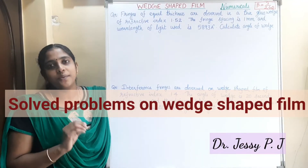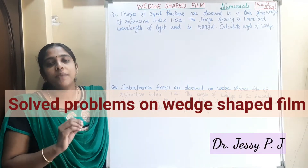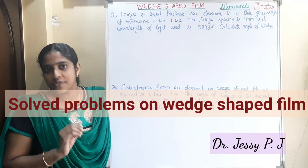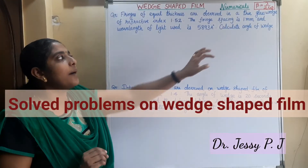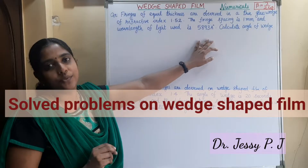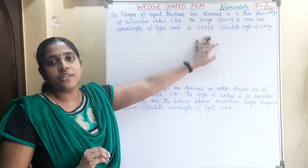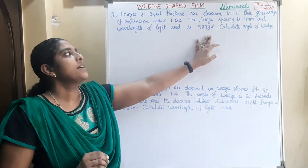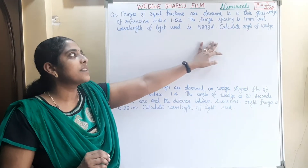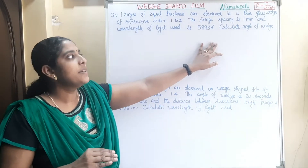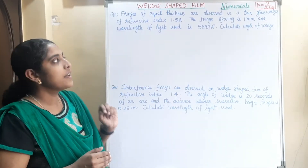Hi y'all, today we can do the numericals based on wedge shape film. The main formula used in wedge shape film is fringe width beta is equal to lambda by 2 mu theta. Fringe width is the distance between two consecutive bright band or dark band. Lambda is the wavelength of light used, mu is the refractive index of the film, and theta is the wedge angle.